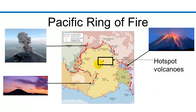The third way that volcanoes can be formed is through the action at hotspots. Hotspots do not necessarily form along a plate boundary. Hotspot volcanoes can form in the middle of a tectonic plate. Here's an example of a hotspot right there in the middle of the Pacific plate.